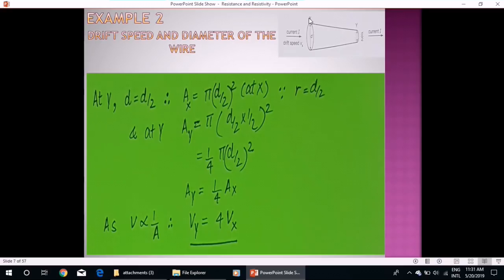The second case is when diameter will be half at the other point. Like at X it is d and at Y it will be d by 2. Same current I is flowing, and drift speed at X is denoted by Vx, and at Y we will denote it by Vy.